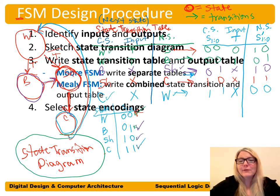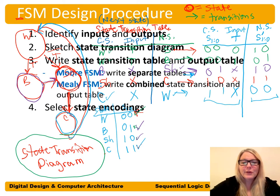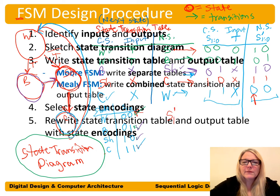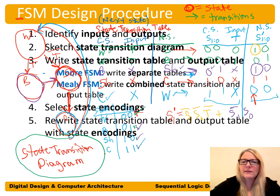Now we can write next state equations from this truth table — equations for the next state bits. Starting with S1 prime: we circle the ones and get S1_bar · S0_bar · T_bar, OR S1_bar · S0, OR S1 · S0_bar.